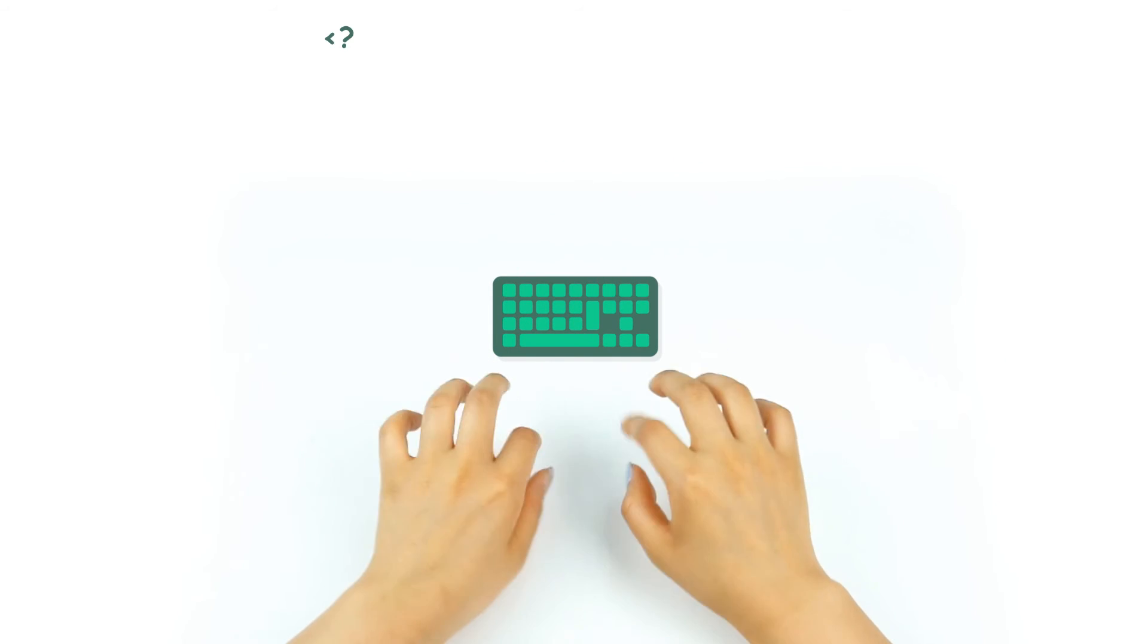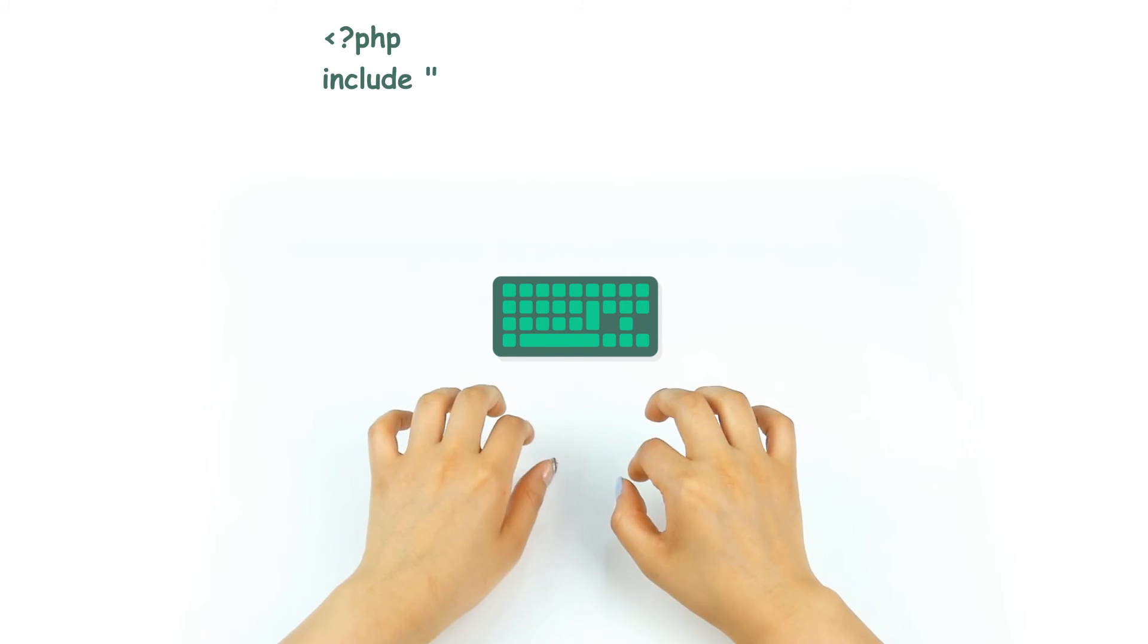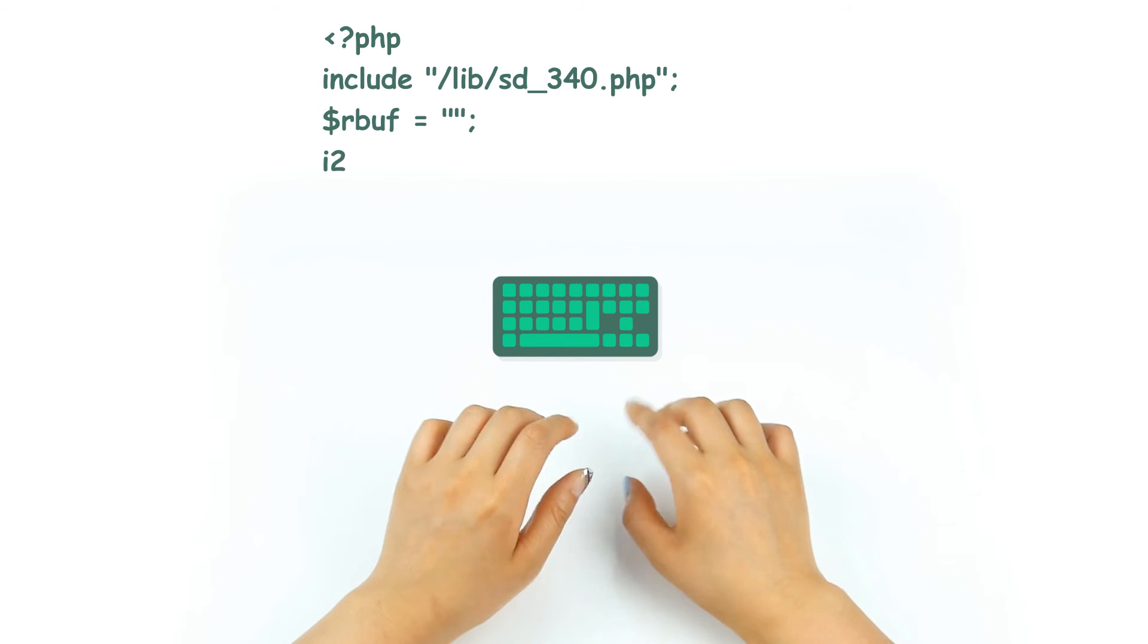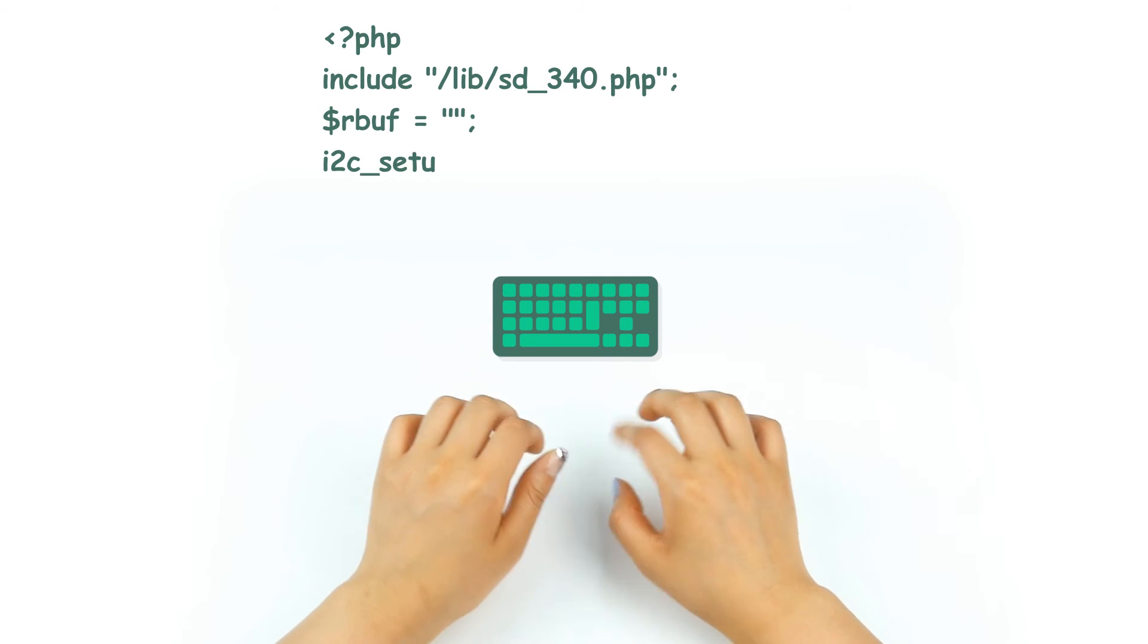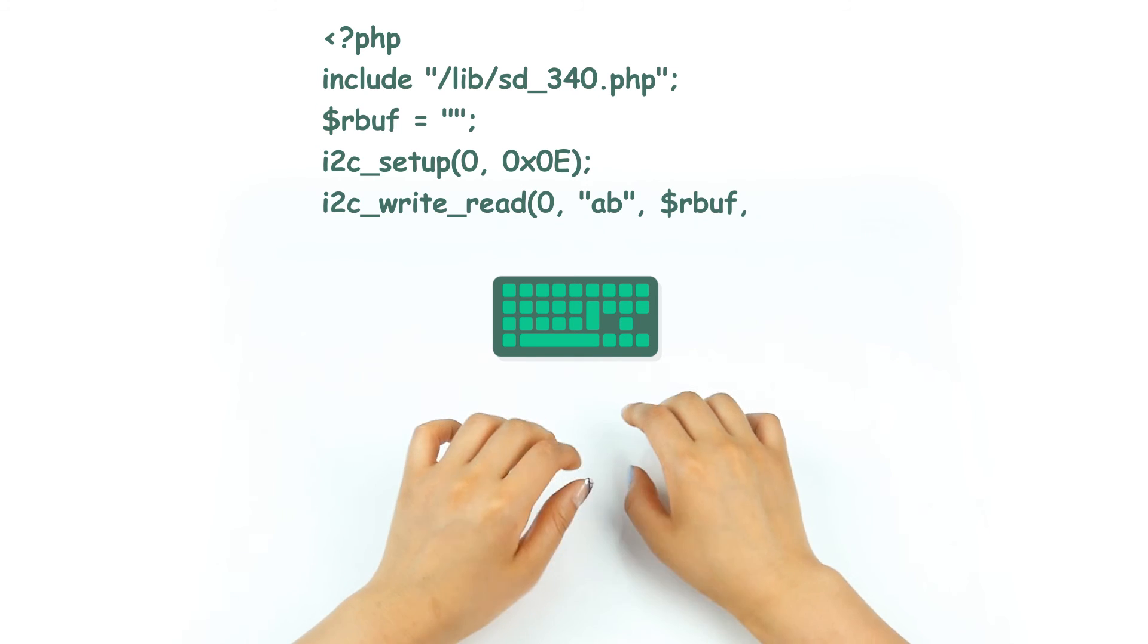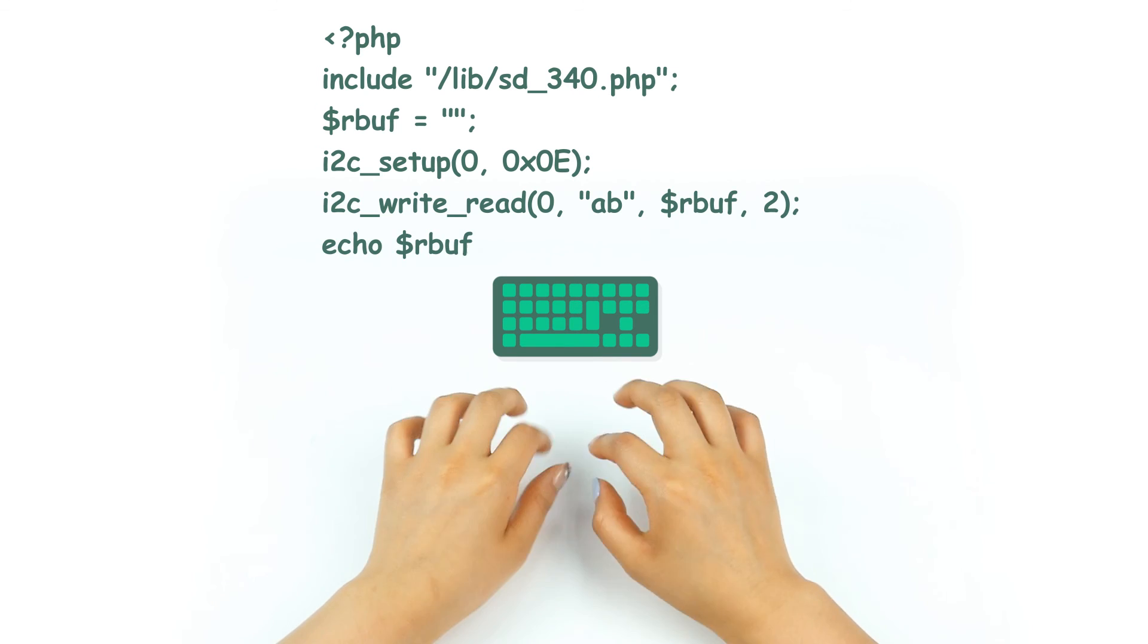Alright, let's include basic library as usual and set a variable that incoming I2C slave's data will be saved in. This line is to reset I2C port zero and set the slave device's address. The next line is to read and write two bytes of data with I2C. And lastly, print the I2C data.